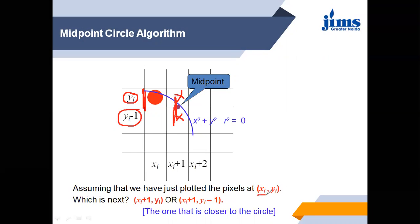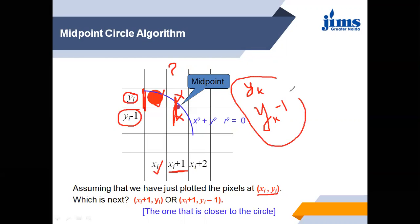Suppose we select this pixel first, meaning we glow this one — the value of this pixel is high. Now we have to find out the next pixel. We know the x coordinate value, so this is xi plus 1. We have to find out the value of y. As we discussed, the next pixel will be either yk or yk minus 1. So this is the reason we are going to find out the midpoint of these two.